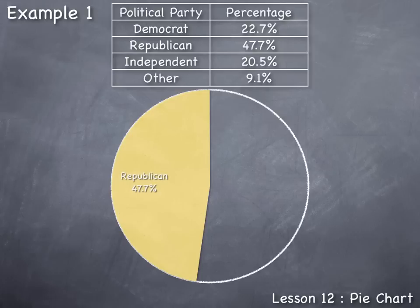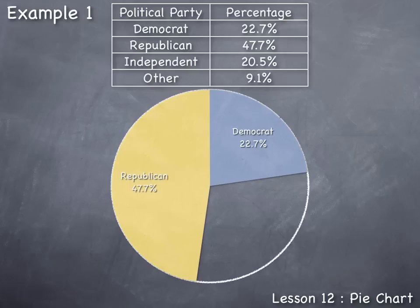Next I will make a section of the pie for the Democrat party. In this case it occupies twenty-two point seven percent of the pie chart. Twenty-two point seven percent is just about two point three percent shy of a quarter, or twenty-five percent. So we draw a section to that size, label it Democrat, and give its value twenty-two point seven percent.